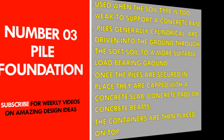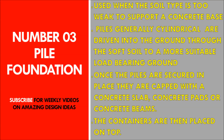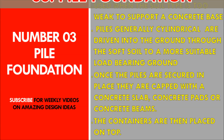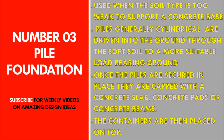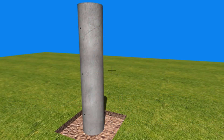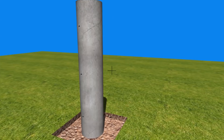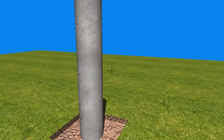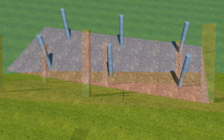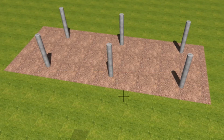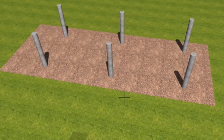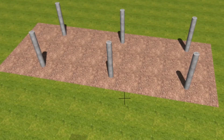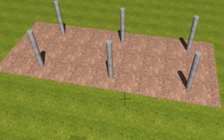Our third foundation type is called a pile foundation. A pile foundation is used when the soil type is too weak to support a pier foundation or a concrete slab foundation. In this type, piles — which are generally cylindrical — are driven into the ground through the soft soil until you reach a suitable load-bearing ground.